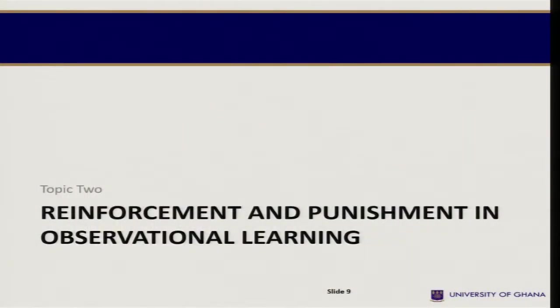Topic two discusses reinforcement and punishment in observational learning. From the point of view of learning, do we have reinforcement? Do we have punishment? Remember that punishment and reinforcement were discussed when we covered operant conditioning, but here we look at it from the point of view of observational learning. We have vicarious reinforcement — Bandura used this term to mean a situation when someone observes another person being rewarded for a behavior, resulting in reinforcement in the observer as well.